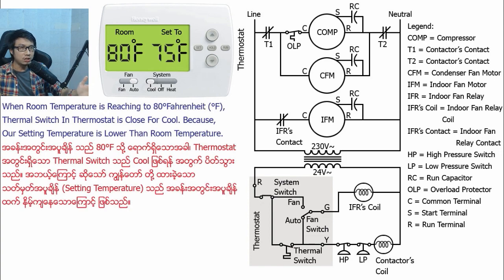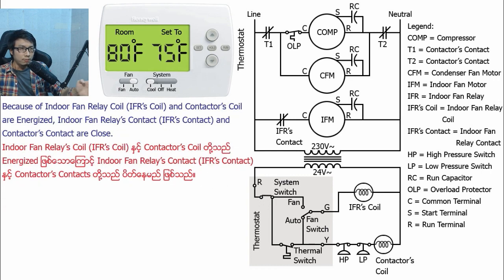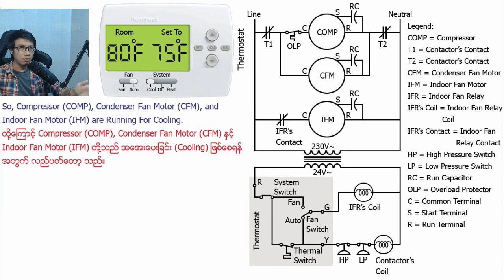When room temperature reaches 80 degrees Fahrenheit, the thermal switch in the thermostat closes for cool because the set temperature is lower than room temperature. At that time, the indoor fan relay coil and contactor coil are energized because 24V AC current is flowing into them. The indoor fan relay contact and contactor contacts are closed, so line and neutral current flows into the compressor, condenser fan motor, and indoor fan motor, and they are all running for cooling.